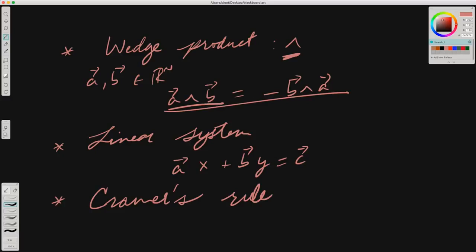We're going to use that wedge product to solve a two-variable linear system: AX plus BY equals C, where A, B, and C are vectors, and X and Y are scalars. I'll show how that solution technique is related to Cramer's rule.